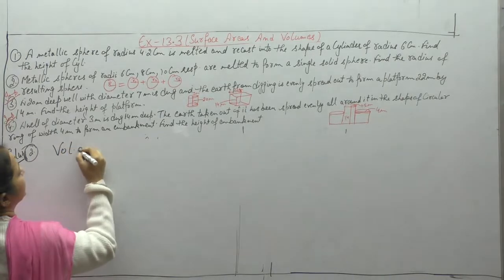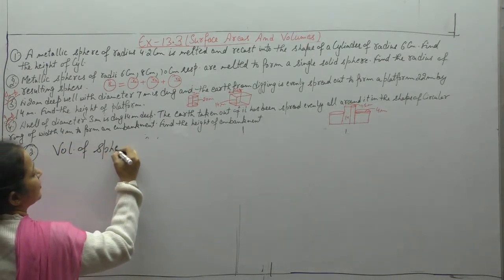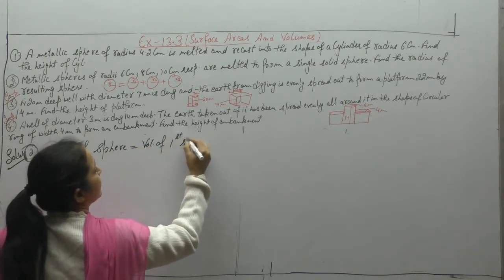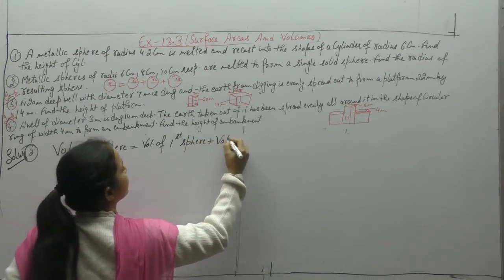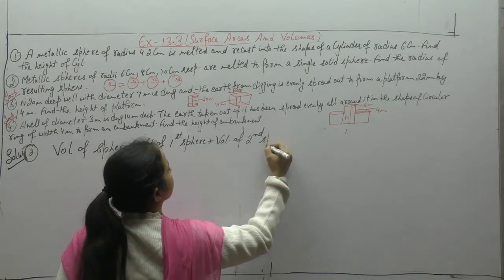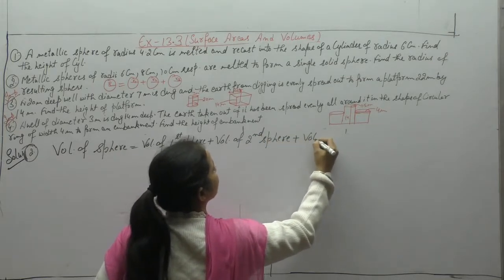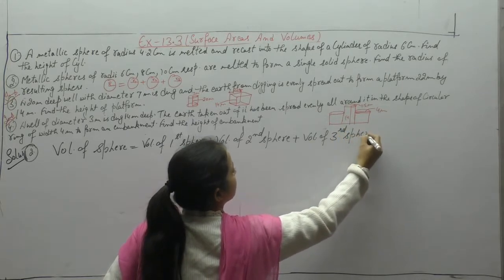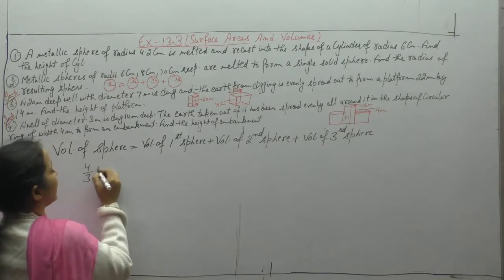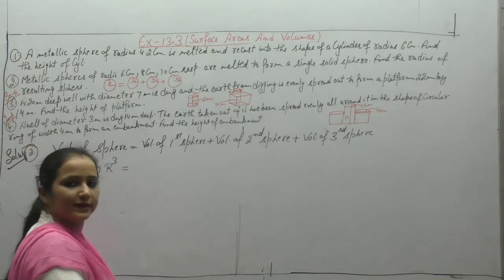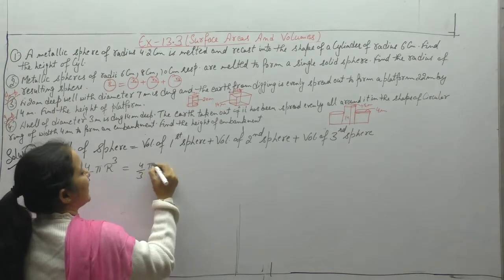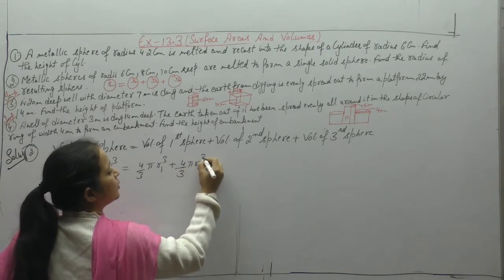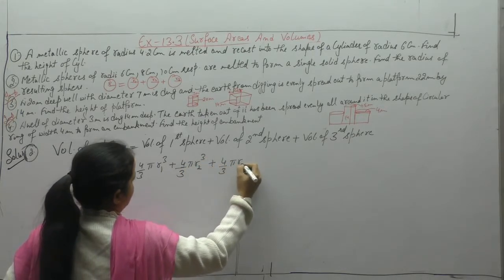So volume of the single sphere formed equals volume of first sphere plus volume of second sphere plus volume of third sphere, since all three spheres are melted to form one sphere. Setting up: (4/3)πR³ = (4/3)πr₁³ + (4/3)πr₂³ + (4/3)πr₃³. The (4/3)π cancels from both sides.